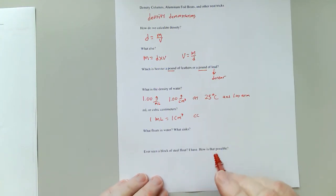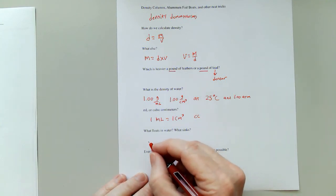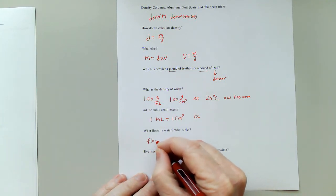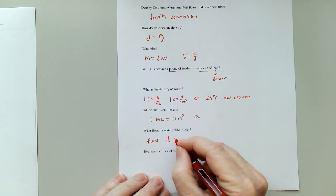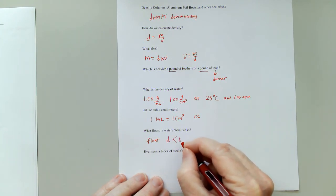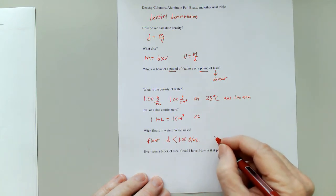So from the demonstrations in that video, we see that things that float in water, you float in water if your density is less than 1.00 grams per milliliter.